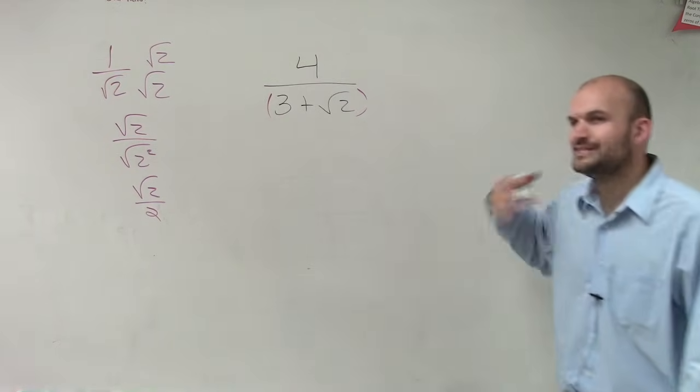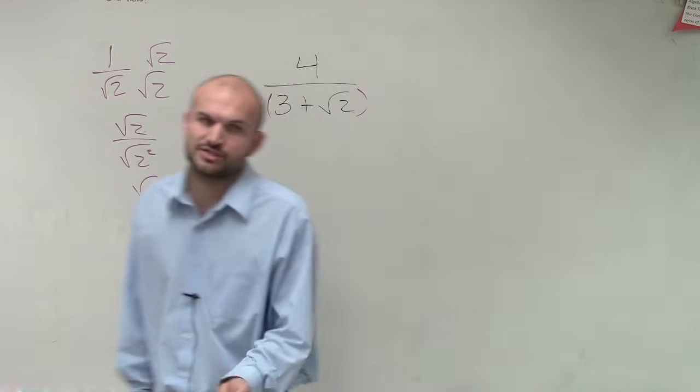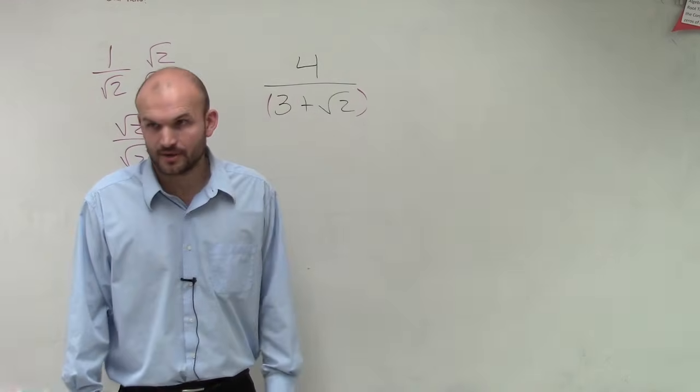So what we need to do is we need to think of a number that we can multiply by 3 plus the square root of 2 that is going to undo my square root, all right?